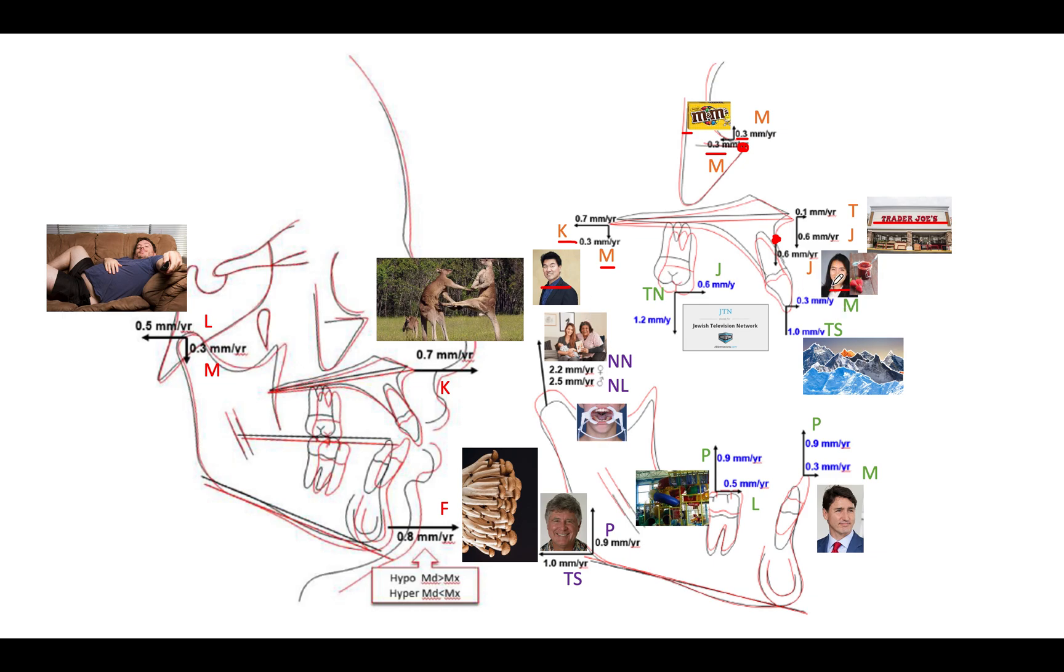And then here, the incisor is erupting downward and it's also moving forward. So it's going to be a 0.3 millimeter per year, 1.0 millimeter per year extrusion. So that's MTS. So here's a picture of mountains, MTS, mountains. So you can kind of imagine the incisor being like a little mountain. And since there's two incisors, it's going to be mountains, plural.